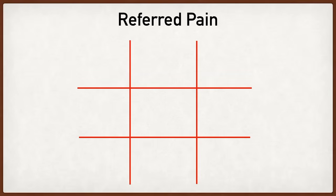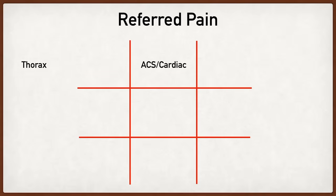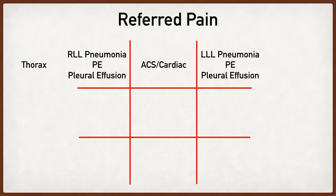Now let's talk about things outside the abdomen that can lead to referred pain to the abdomen. There's a lot of thoracic pathology that can cause referred pain to the upper abdomen. One main example is acute coronary syndrome — if a patient is complaining of epigastric discomfort and has risk factors, don't forget about myocardial infarction. A right lower lobe pneumonia can lead to referred pain to the right upper quadrant, and a left lower lobe pneumonia to the left upper quadrant. Similarly, pulmonary emboli and pleural effusions can also lead to upper abdominal pain.